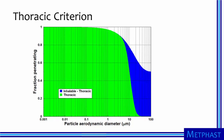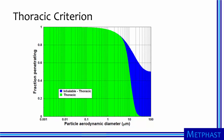In this graph, we superimpose a thoracic criterion in green on top of the inhalable criterion. No particles larger than about 30 micrometers in aerodynamic diameter can reach the tracheobronchial region because they cannot enter the respiratory system or they do not make it past the nasal, pharyngeal, laryngeal region. On the other hand, about half of the particles 10 micrometers in diameter and almost all particles one micrometer and smaller can reach the tracheobronchial region. The remainder of the inhalable criterion in blue represents those particles that can be inhaled but cannot make it to the tracheobronchial region.